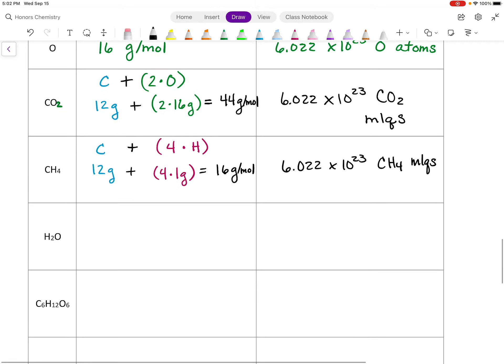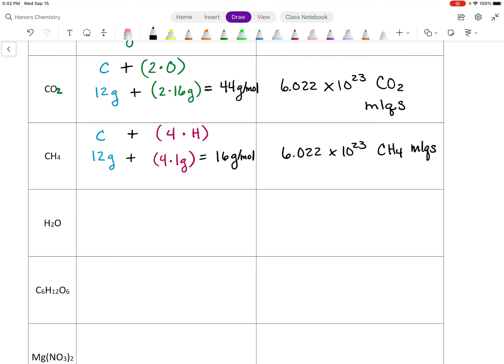Again, we still have 6.022 times 10 to the 23rd CH4 molecules or molecules of CH4. Water is one that we consistently use a lot in chemistry for a variety of different things, and so it's sometimes nice to know this one as well. Some of these I just remember their molar masses because they work with them so frequently. It takes a little bit of time. But with H2O, the 2 is associated with the H. This little subscript is going to be for the H. And so we're going to have 2 times H plus oxygen. So 2 times 1 gram, which will be 2, plus 16 grams. And that's going to give us 18 grams per mole. Again, we have 6.022 times 10 to the 23rd molecules of water.